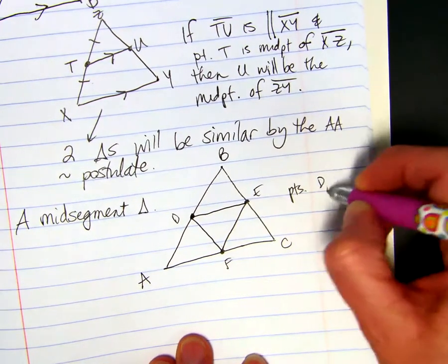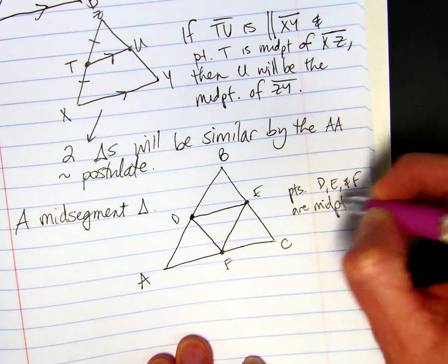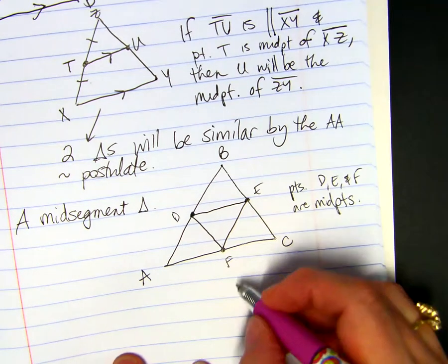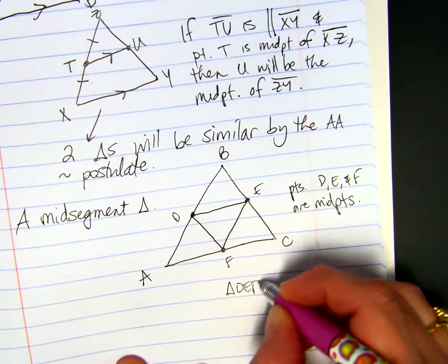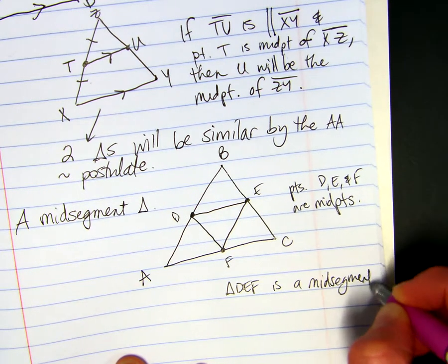So points D, E, and F are midpoints of their respective sides. So triangle DEF is a mid-segment triangle. So all of these five triangles will be similar.